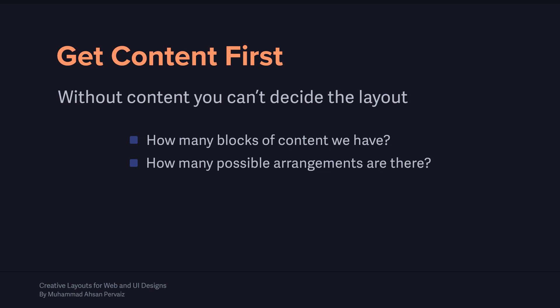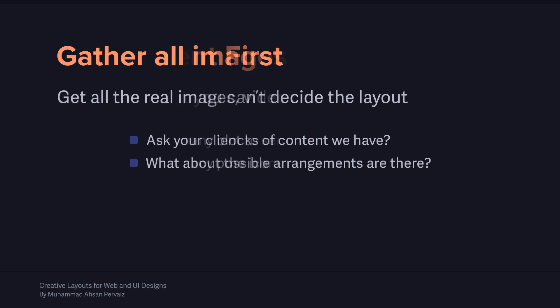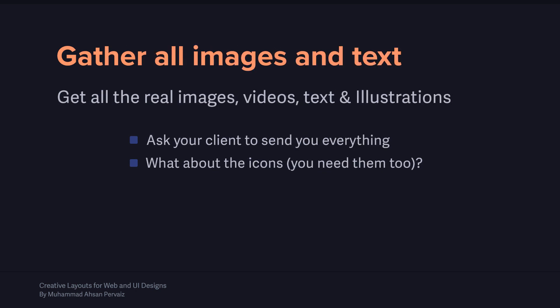Get the content from your CEO, from the business or your client you are designing for, or whoever is going to write that content. Content doesn't mean just text and images — you might have videos, illustrations, or icons. Gather all these different things before you start your design. Ask your client to send you the images you need, not low-quality ones, and get icons related to a similar theme. Send emails requesting all the content and text so you can start working on your layout.